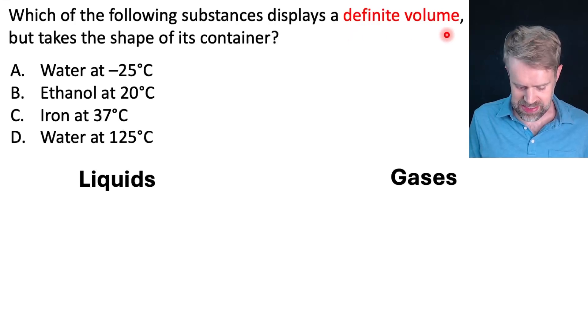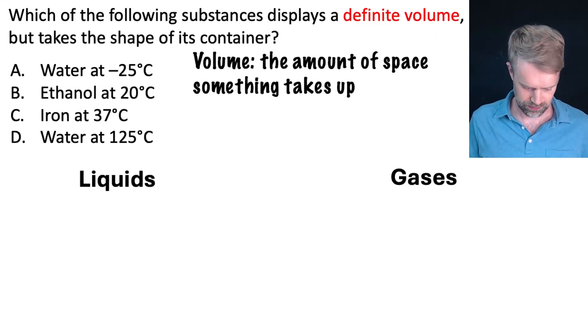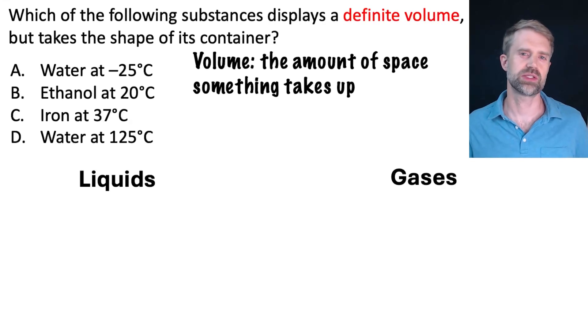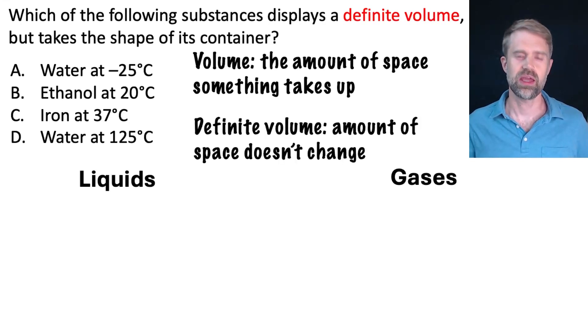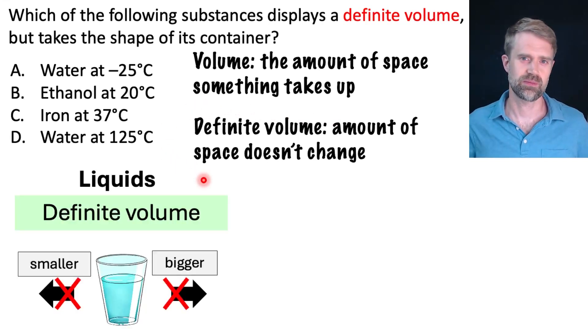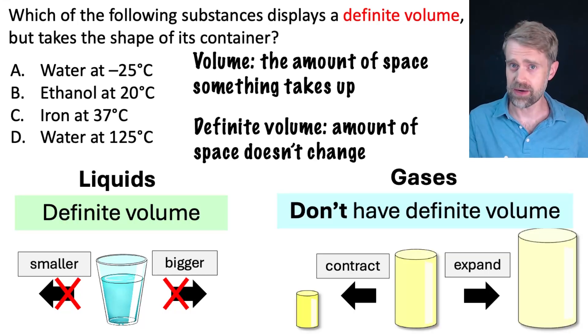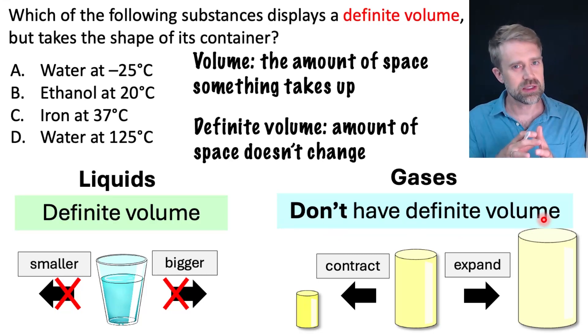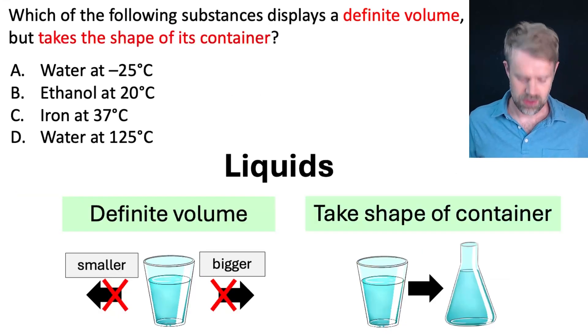We're looking for something that has a definite volume. Volume is the amount of space something takes up. If something has a definite volume, that means that the amount of space it takes up doesn't change. The amount of space they take up doesn't just randomly shrink or expand. But gases do not have definite volume. They can shrink to take up less room or they can expand to take up more room.